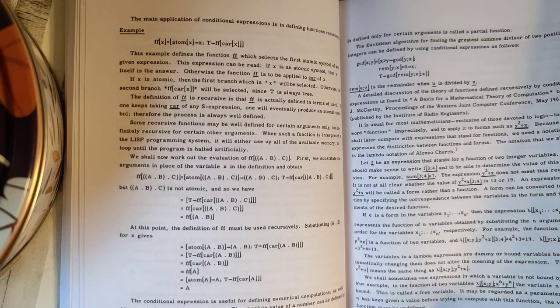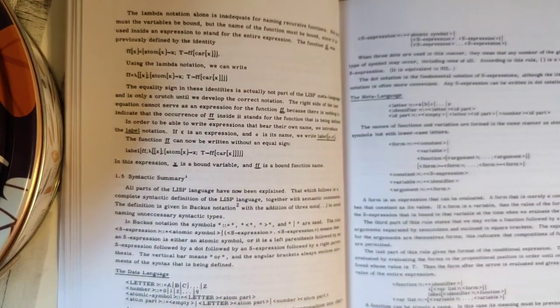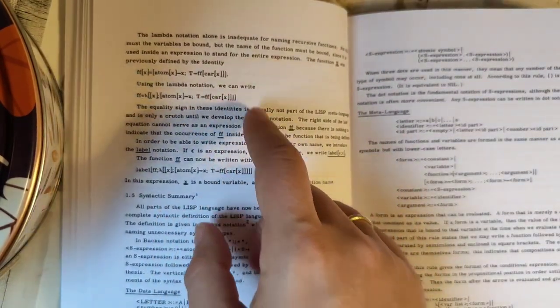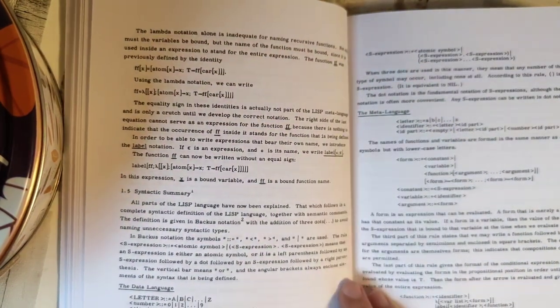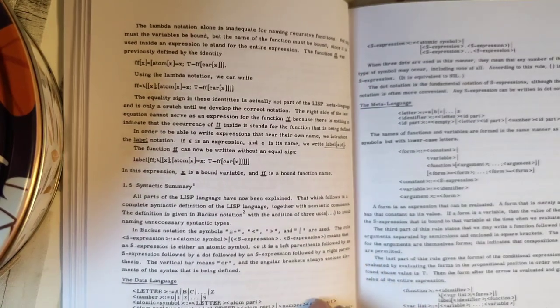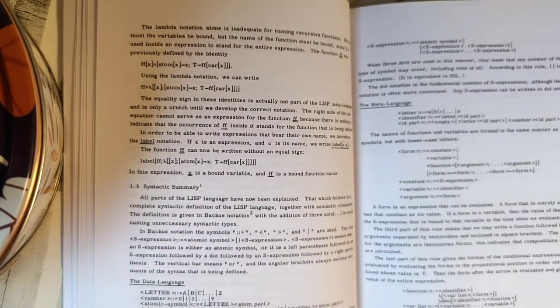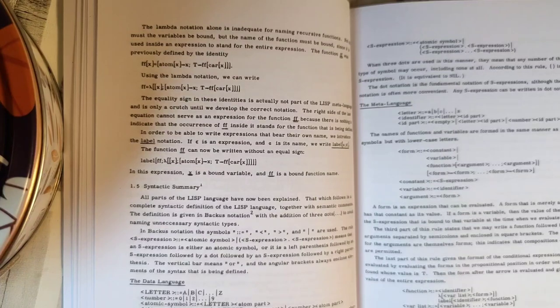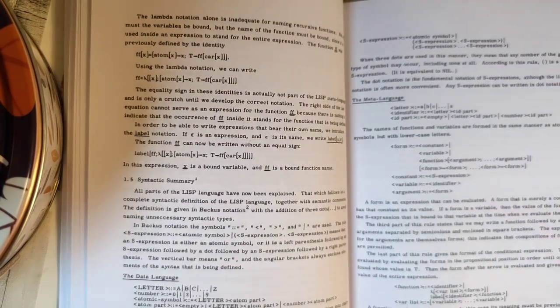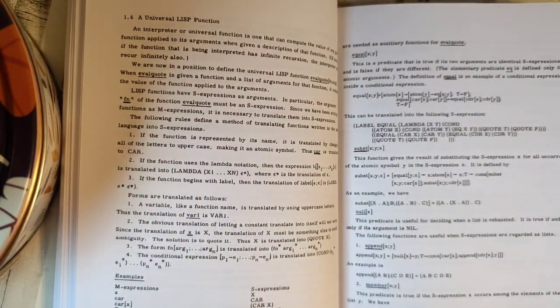So, so they go there, explain you a greatest common divisor algorithm and just go straight into using recursions in LISP, which, of course, was something exceptional at the time when you were having such Fortran, which was not able to do a recursion. So, that was quite an achievement at the time. Now, what's also interesting is that they tell you that lambda notation alone is inadequate for naming recursive functions. Like, greater to define it, but how do you refer to it?